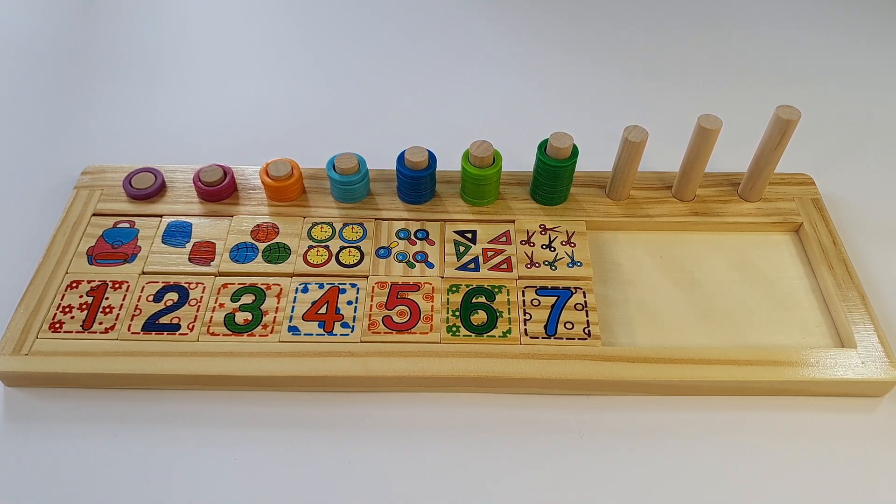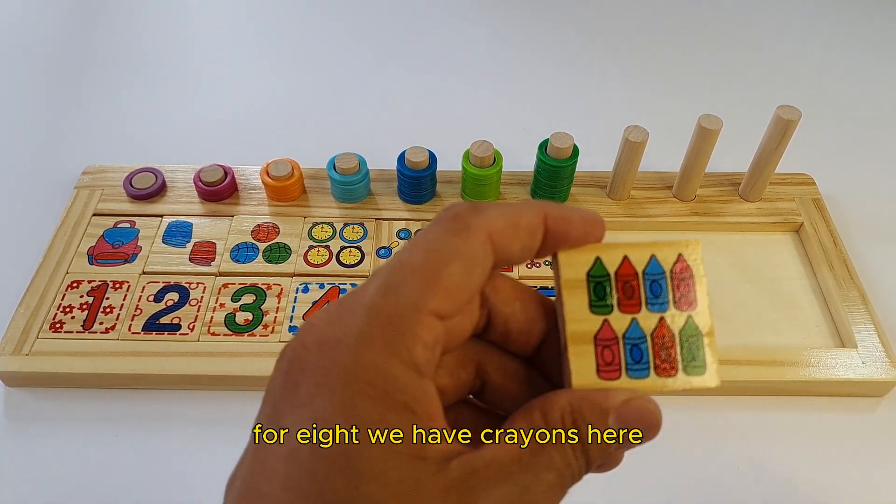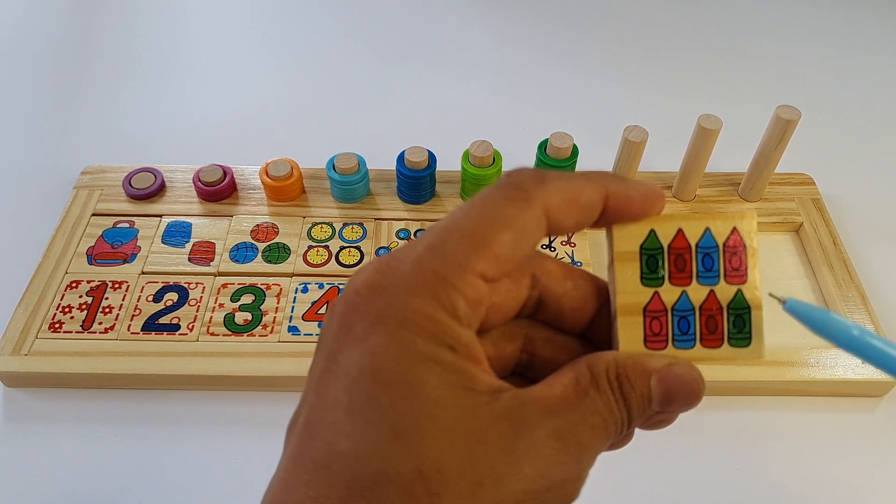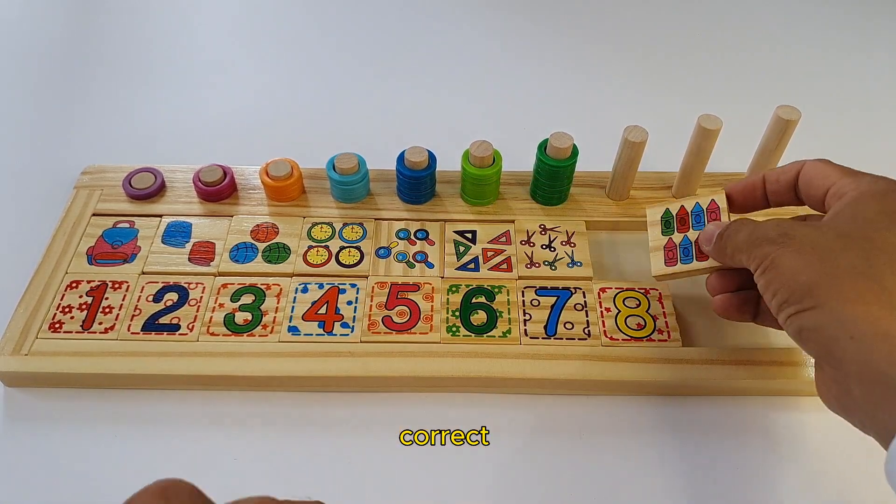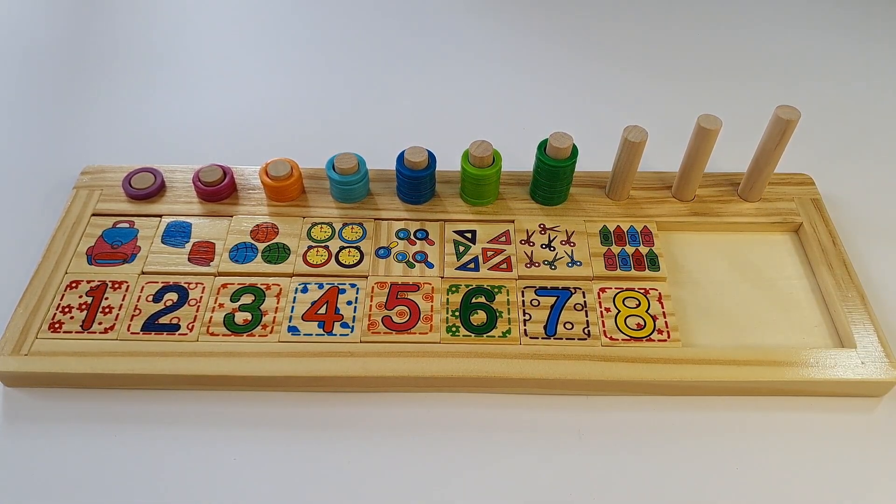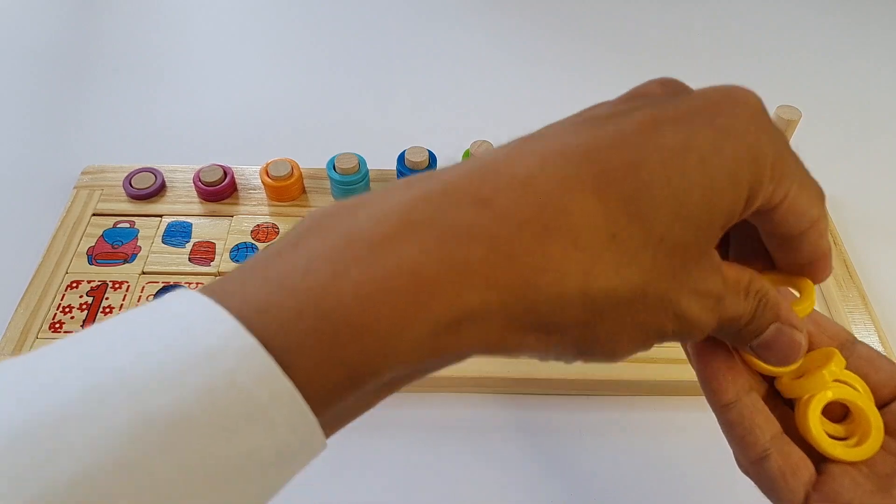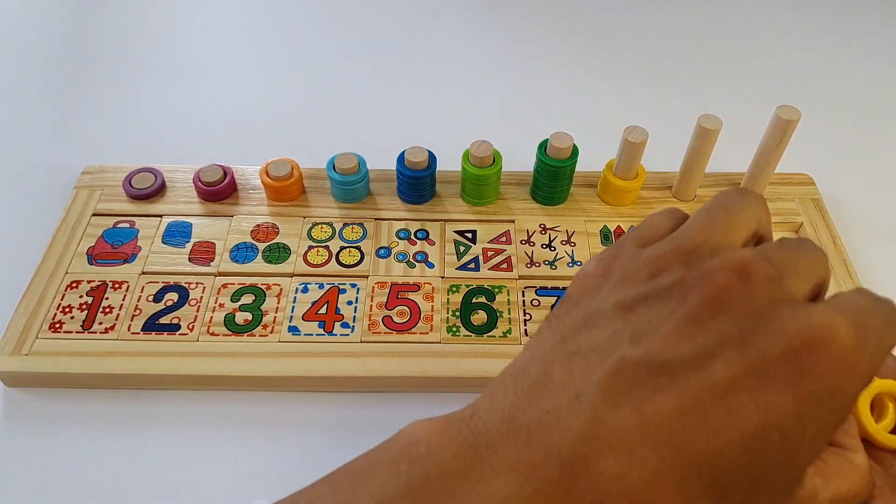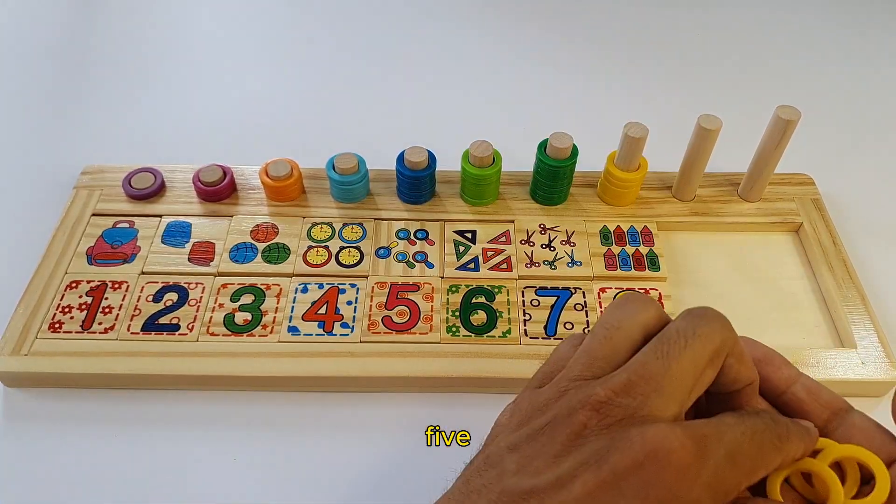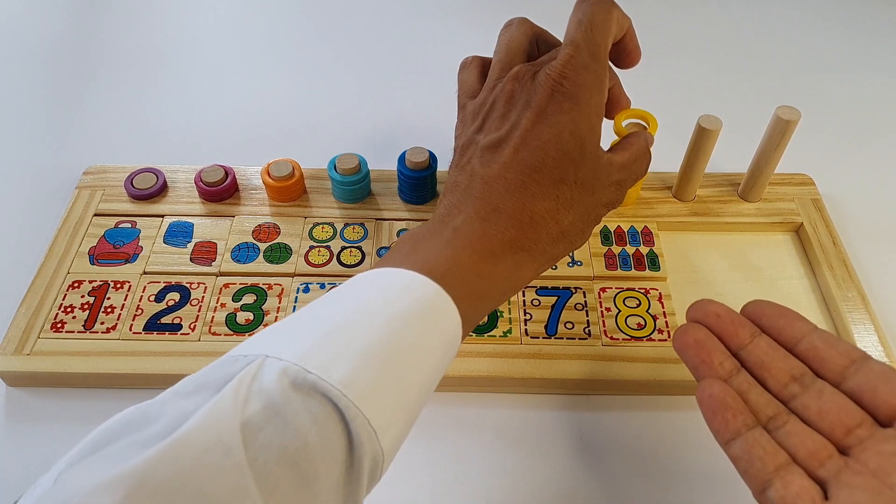The next number. The next number is... Try to guess it? Yes. It is eight. For eight, we have crayons here. Let us see. One, two, three, four, five, six, seven, eight. Correct! Eight. Eight rings, yellow ones. One, two, three, four, five, six, seven, eight.